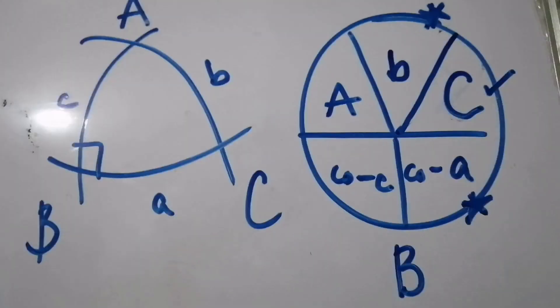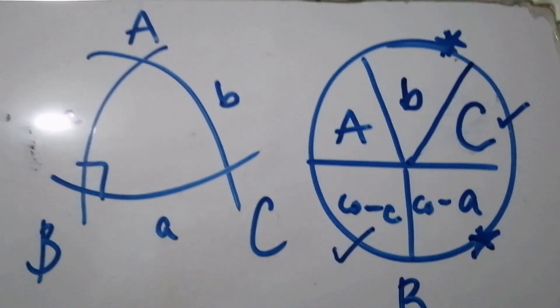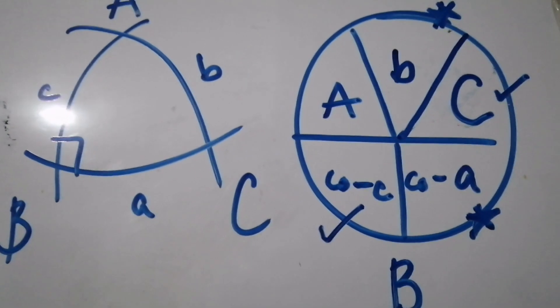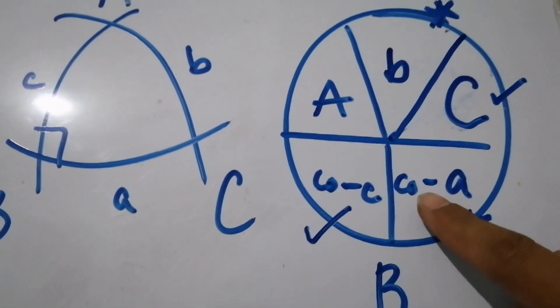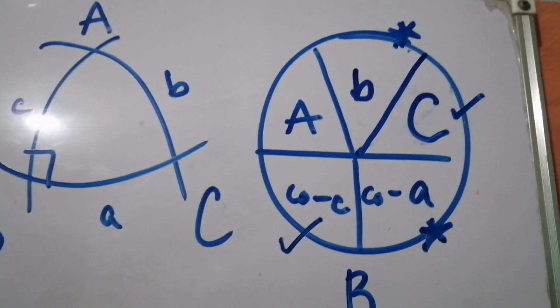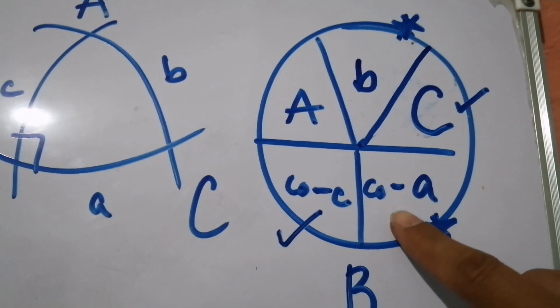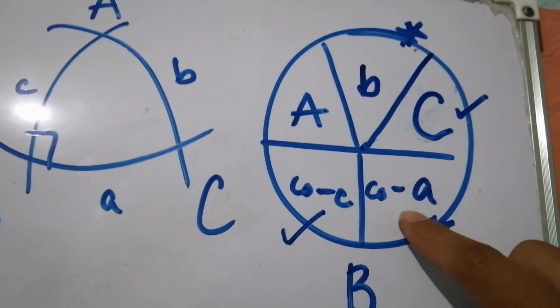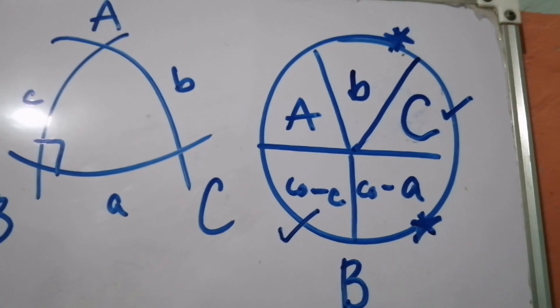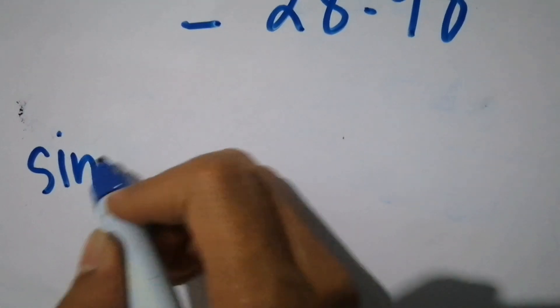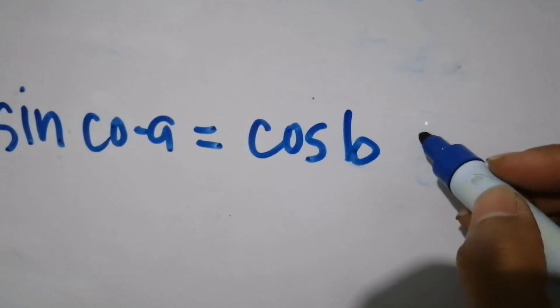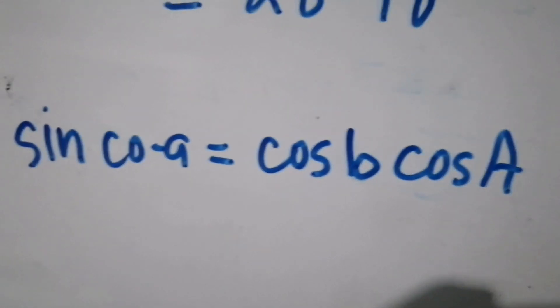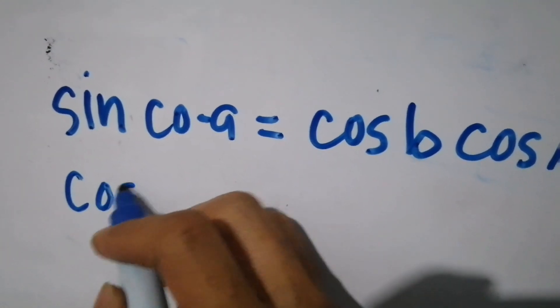The last unknown to solve is angle A. We again use the given parts: small b and small a. Focusing on co-A, small b, and small a — small a serves as the middle part, with small b and angle A serving as the opposite parts of co-A. We apply the second Napier's Rule: sine of co-A equals cosine of small b times cosine of angle A.